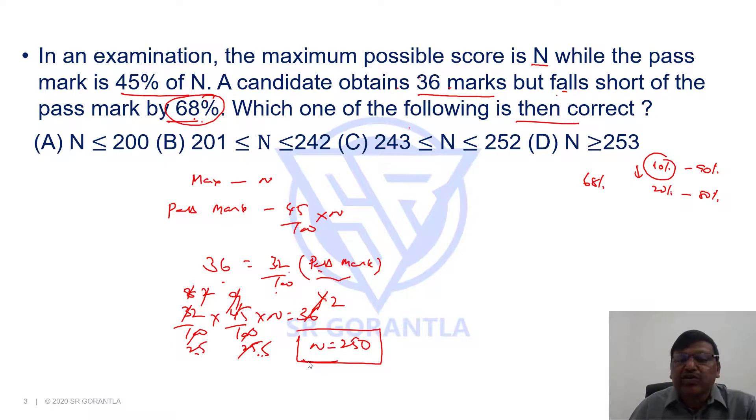So, the N value is 250 means which of them is correct then choice C. Because here he says N is between 243 and 252. This is correct. Right? So, hence our answer is choice C. Thank you.